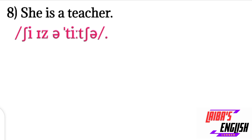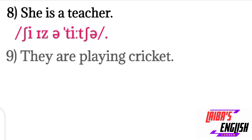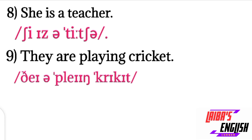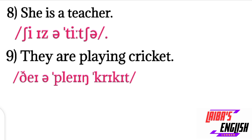The next sentence is: She is a teacher. 'She' is represented with the 'sh' sound (like the digraph, not F) and a long 'ee' sound. Then 'is' and 'a' with the schwa sound. For 'teacher': T sound, long 'ee' sound, then the 'ch' sound presented with the digraph, and a schwa sound at the end. She is a teacher.